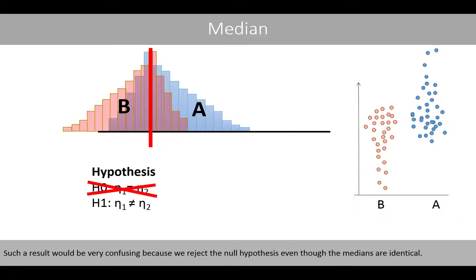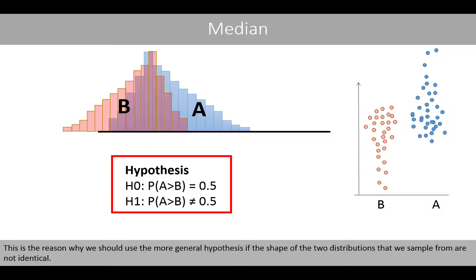Such a result would be very confusing because we reject the null hypothesis even though the medians are identical. This is the reason why we should use the more general hypothesis formulation if the shape of the two distributions we sample from are not identical.